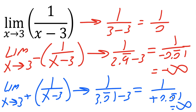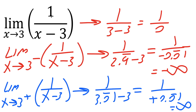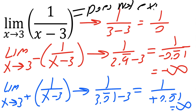One divided by a very small positive number is positive infinity. So the limit as x approaches three to the left is negative infinity, while the limit as x approaches three to the right is positive infinity. Therefore, the limit as x approaches three does not exist. That is our final answer.